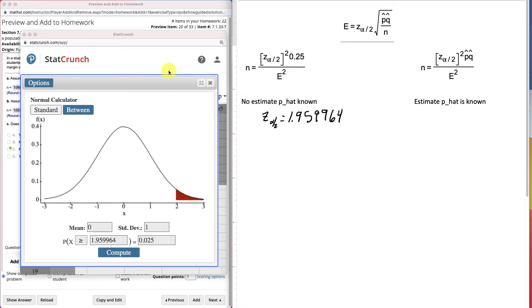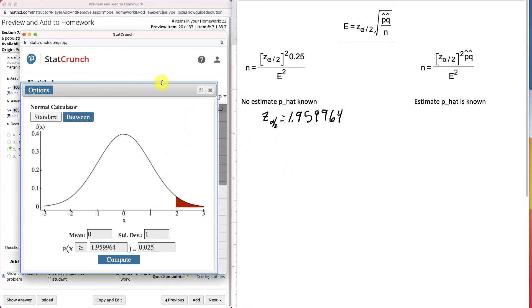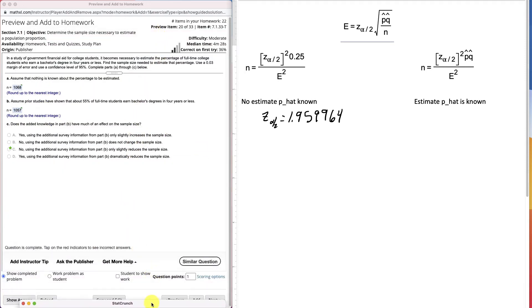And we see that our z alpha divided by 2 is 1.959964. I'll use all the information. So that's that information. I got it from StatCrunch using the calculator in there. Now we have this portion, now we need to know E. E was given to us. Use a .03 margin of error. So E is .03.